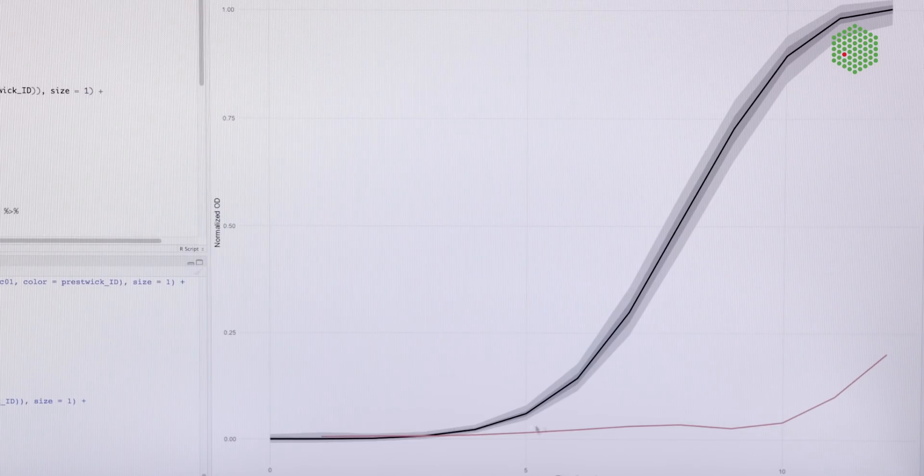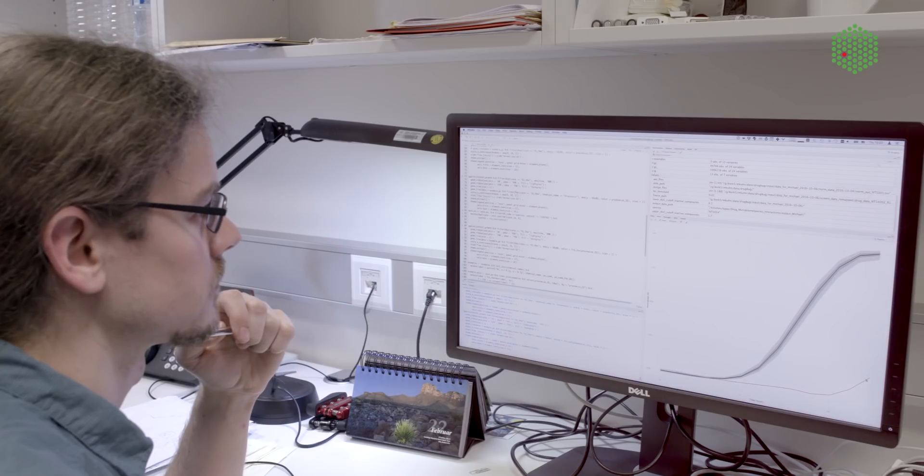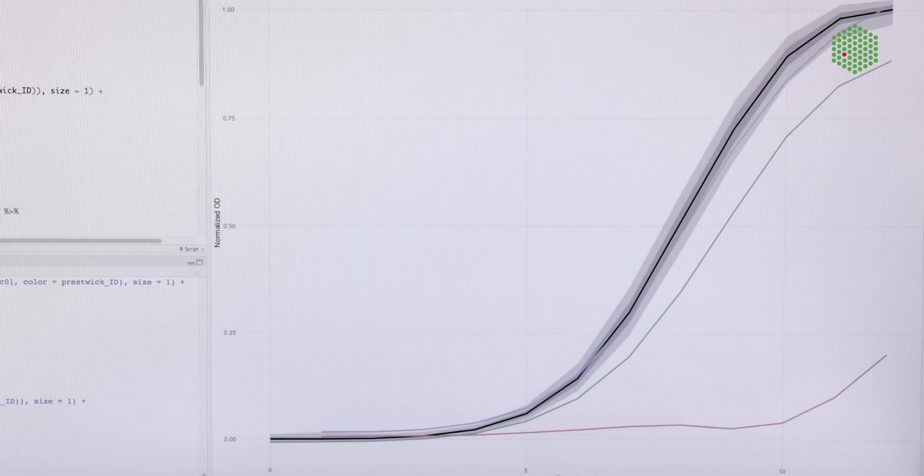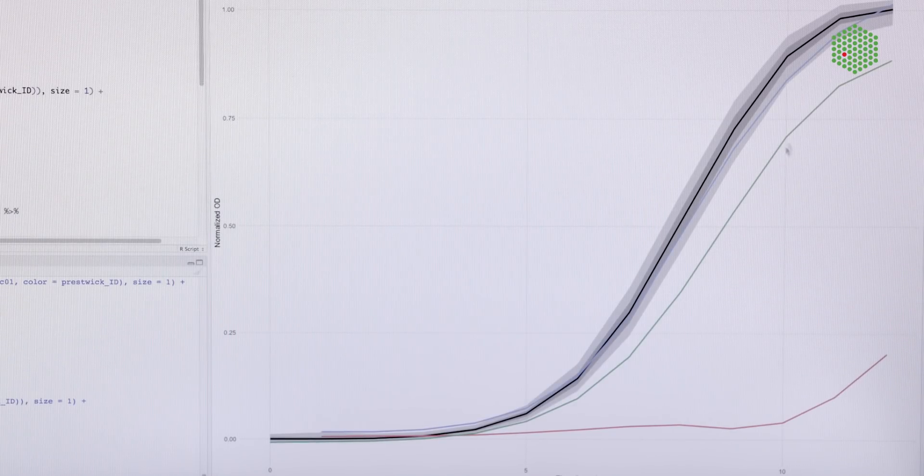In some cases nothing grows, and then it's easy to say that this is a hit, but there's also a grey area in between where we need to apply statistical methods to define if this is a hit or not.